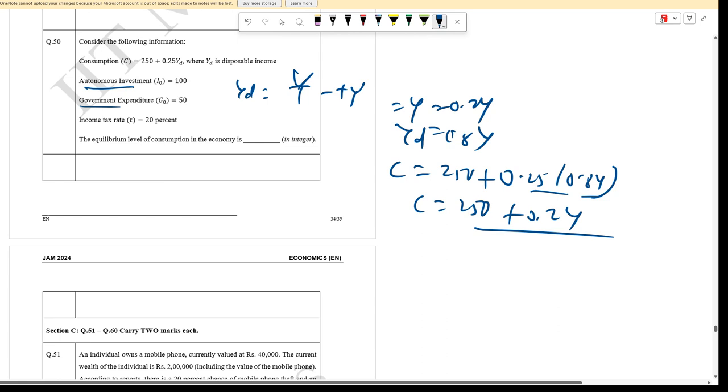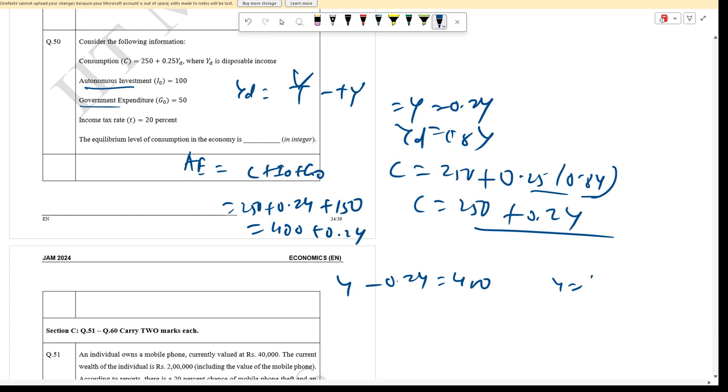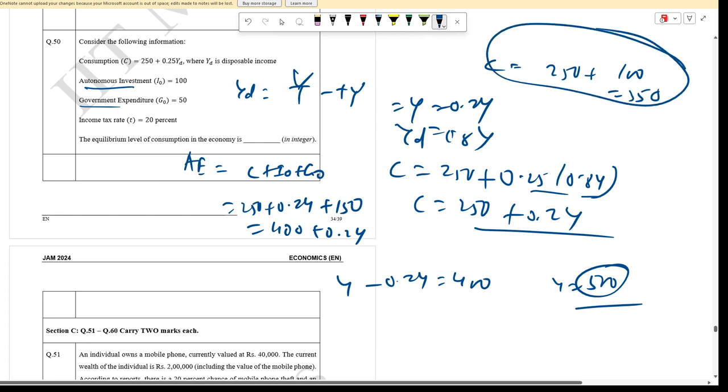C equals 250 plus 0.4Y. Aggregate expenditure AE equals C plus I plus G, which is 250 plus 0.4Y plus 100 plus 50, equals 400 plus 0.4Y. At equilibrium, Y equals AE, so Y minus 0.4Y equals 400, giving 0.6Y equals 400. Therefore Y equals 400 divided by 0.6, which equals approximately 500. Substituting back, C equals 250 plus 0.4 times 500 equals 250 plus 200 equals 350.